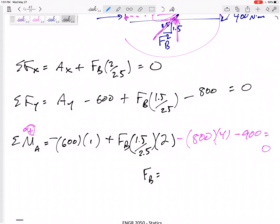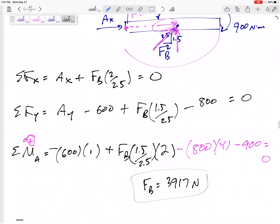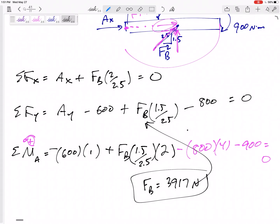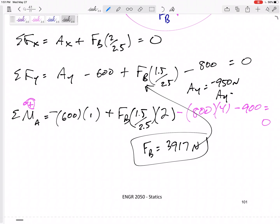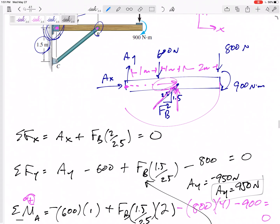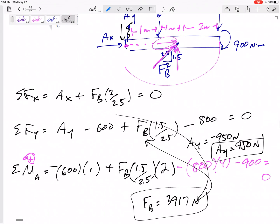So I would get FB 3917. Came out positive, so I guessed the correct direction. Go back, plug it in right here. I've got AY negative 950. What do I want you to do? AY is 950 Newtons, and it is down. Plug in 3917. AX is negative 3133. So AX is 3133 Newtons, that direction.